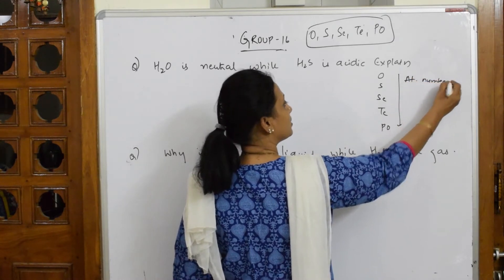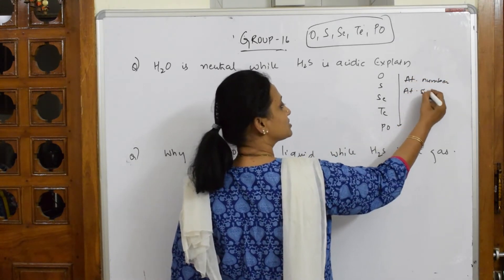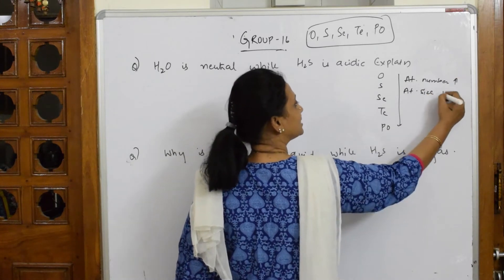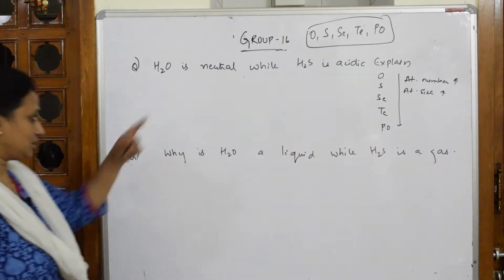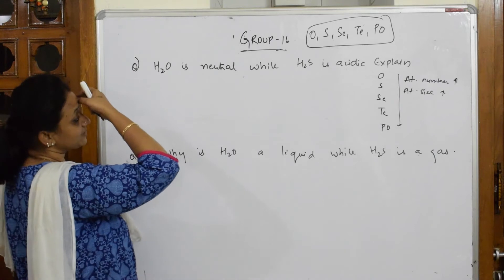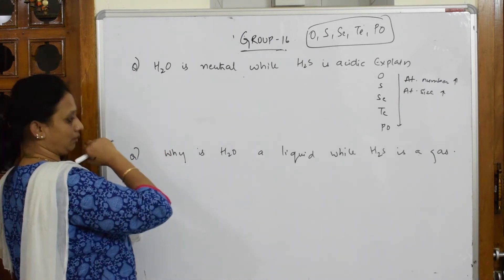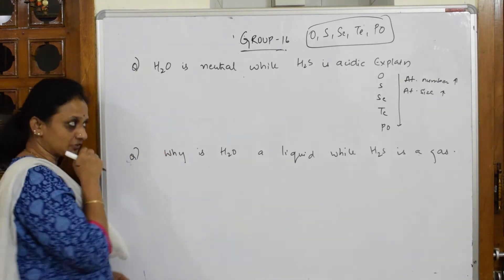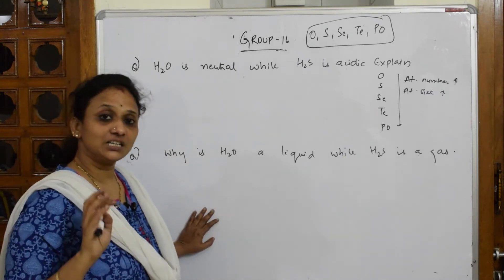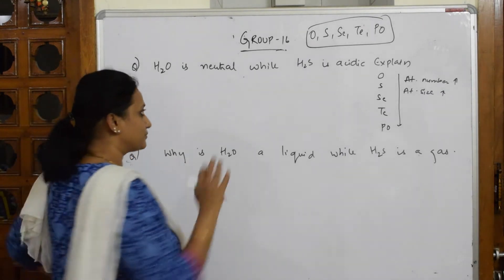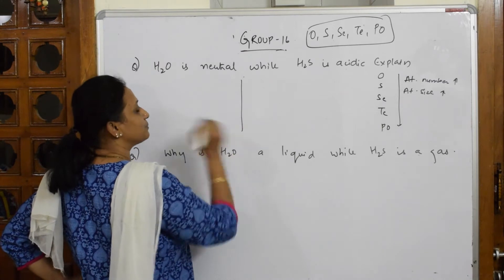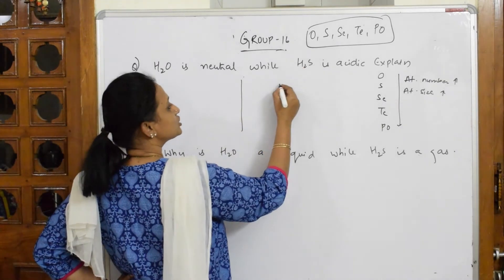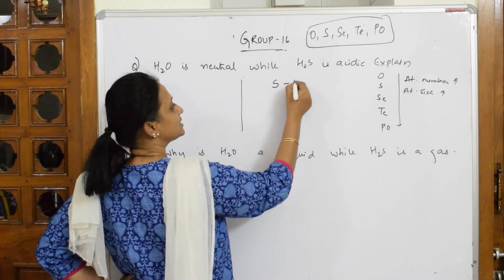As we go down, what is increasing? Atomic number is increasing. When atomic number is increasing, what will increase? Atomic size also increases. Let's come back and write in this term. Now basically in H2S, if I have to see the atomic size is larger in sulfur.